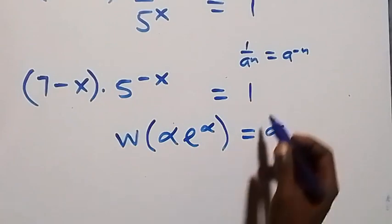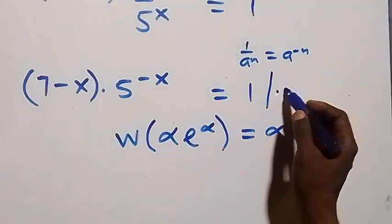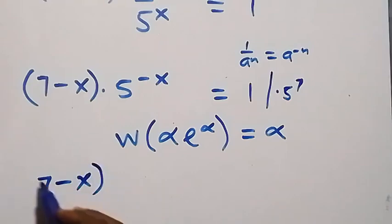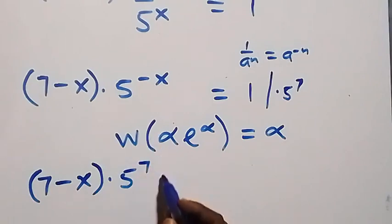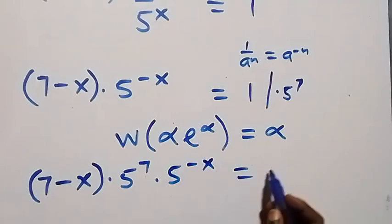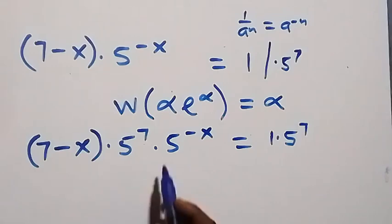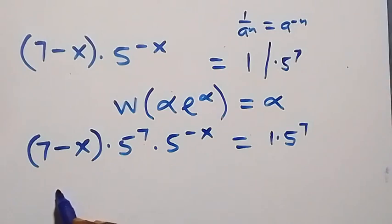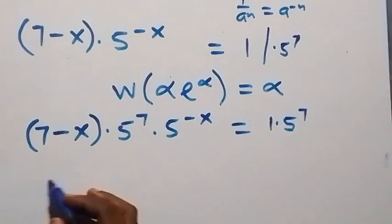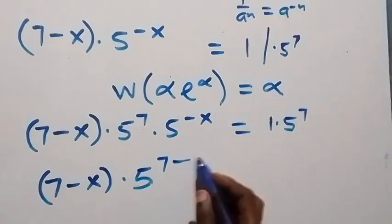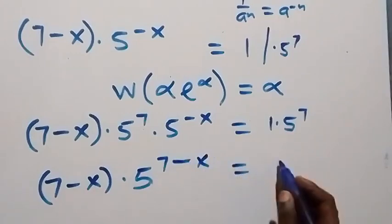This implies we multiply through by 5 raised to power 7. Then we have (7 minus X) multiplied by 5 raised to power 7, multiplied by 5 raised to power minus X. Applying the law of indices, the powers combine and this becomes (7 minus X) multiplied by 5 raised to power (7 minus X), which equals 5 raised to power 7.